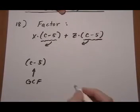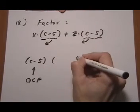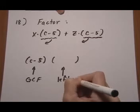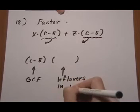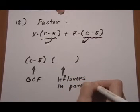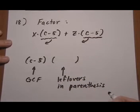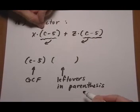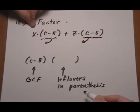And then remember what we do with the leftovers. When we pull out a greatest common factor, leftovers go in parentheses. So we're using the exact same process as in the previous video clip for problems 9 and 10. The leftovers on the first term: we pulled out (c-5), we're left with an x.